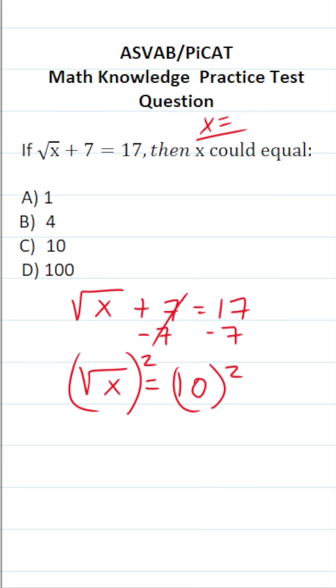The square of a square root cancels out, leaving you with just x. 10 squared is 100, so we can see x equals 100.